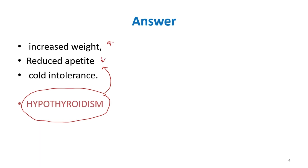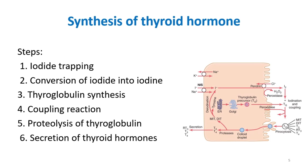The next question: what are the steps involved in the synthesis of thyroid hormone? The basic steps are: iodide trapping, conversion of iodide to iodine, thyroglobulin synthesis, coupling reaction, proteolysis of thyroglobulin, and secretion of thyroid hormone.